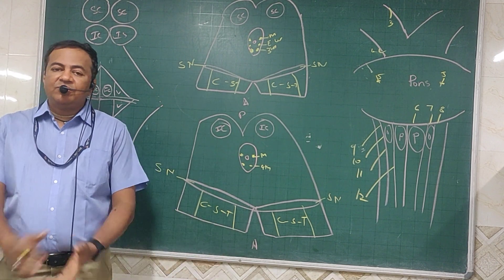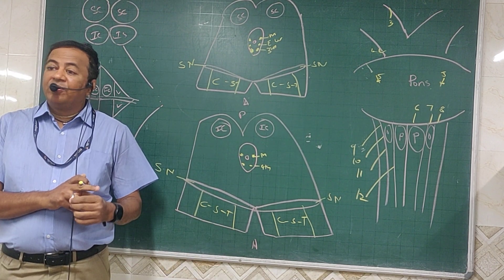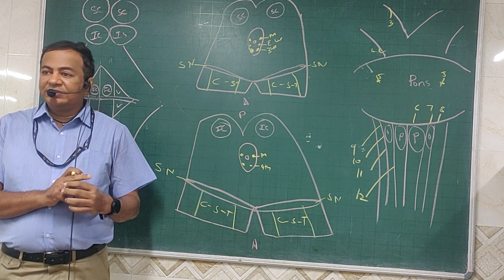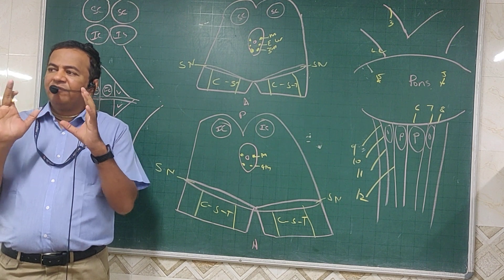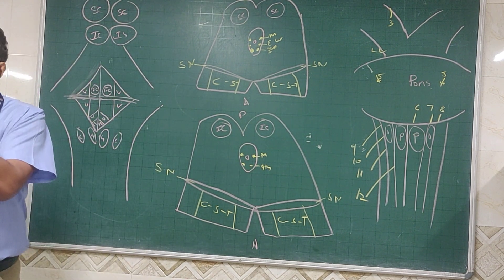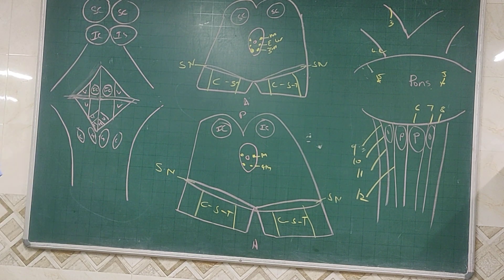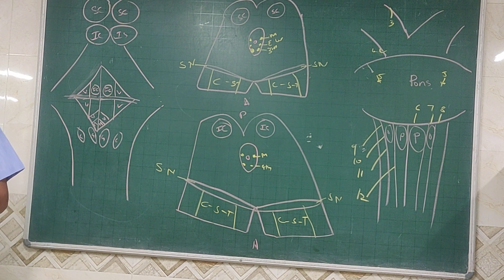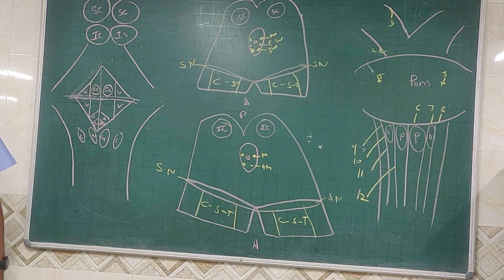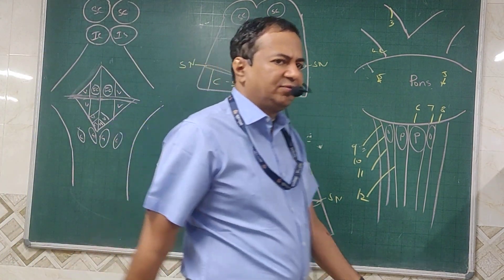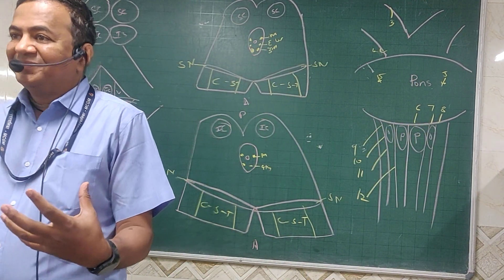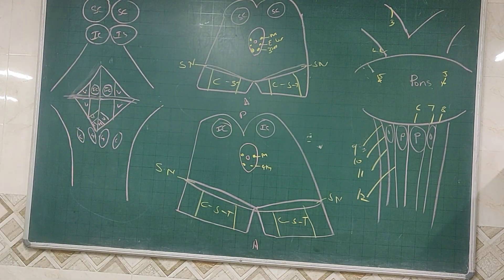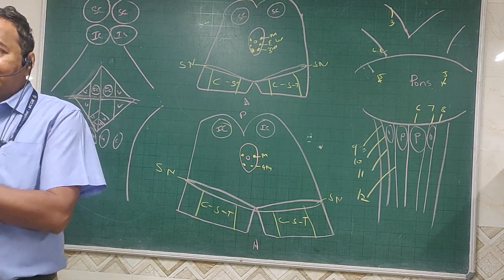What are the basal nuclei? They consist of the corpus caudate nucleus and lentiform nucleus. These are the basal nuclei inside the cerebrum. They are the highest centers for automatic associated movements.